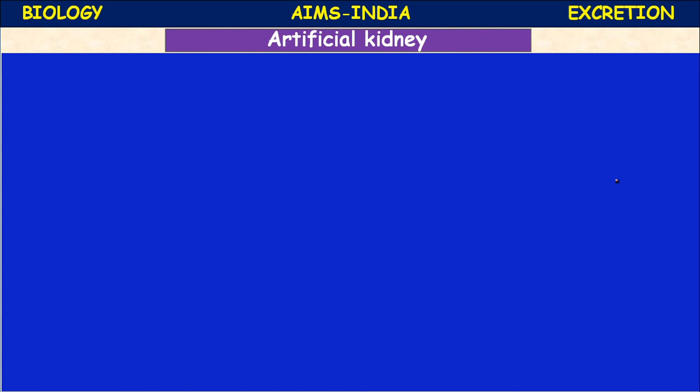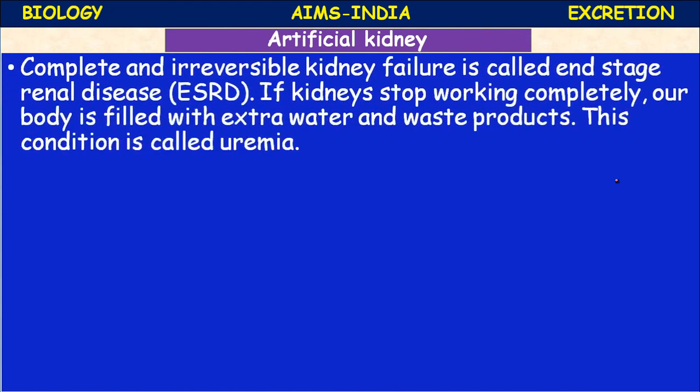The regulation of kidney function depends on some hormones. Sometimes kidney failure occurs. During kidney failure, an artificial kidney method is used. A complete and reversible kidney substitute is provided by an artificial kidney.